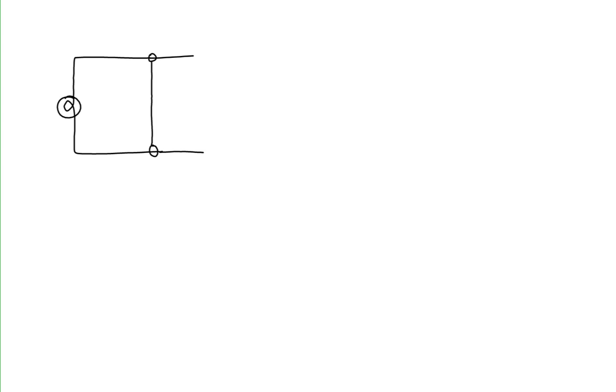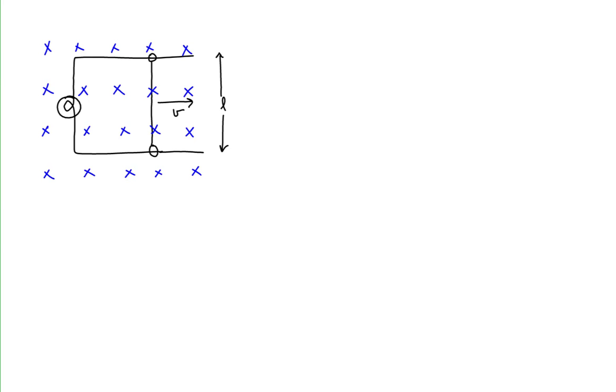Let's begin with a sketch. We have a light attached to a circuit that includes a wire free to slide. This wire is sliding to the right at speed V, and it has a length L. The entire circuit is in a uniform magnetic field, indicated by equally spaced x's, showing the magnetic field is pointing away from us down into the screen.